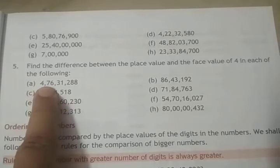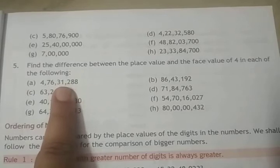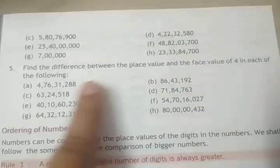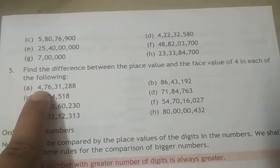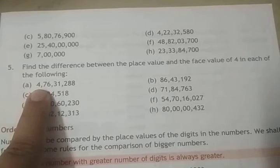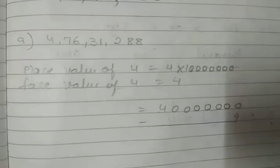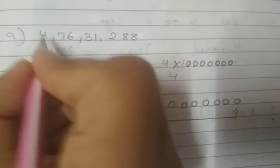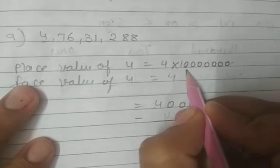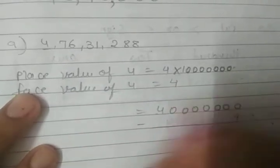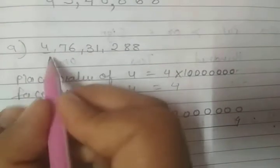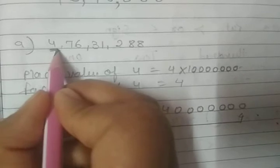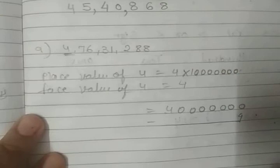Here, 4,76,31,288. Each means we need to find the difference between the place value and face value of 4. The place value is given here. The digit 4 is in the crore place, and the face value is always 4. The face value is the digit itself, whatever digit is there, that is its face value.